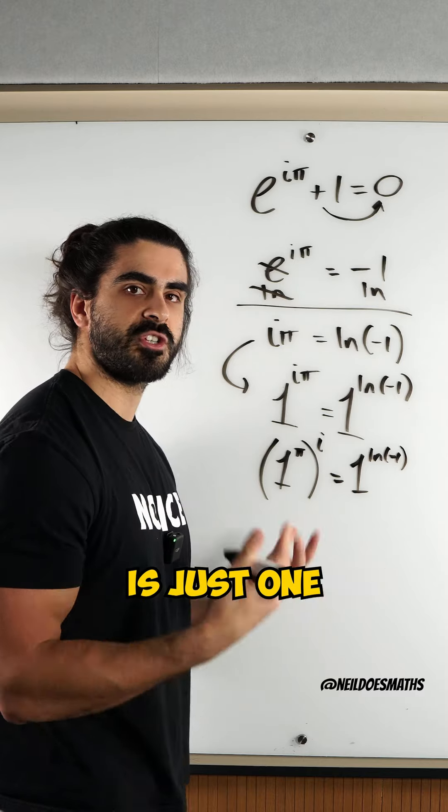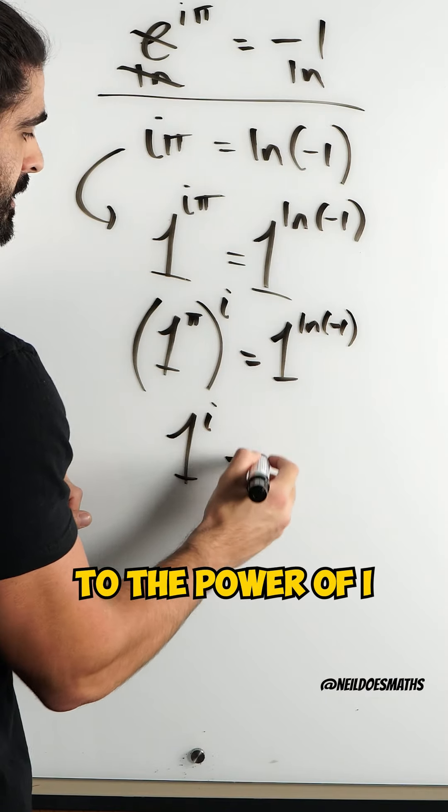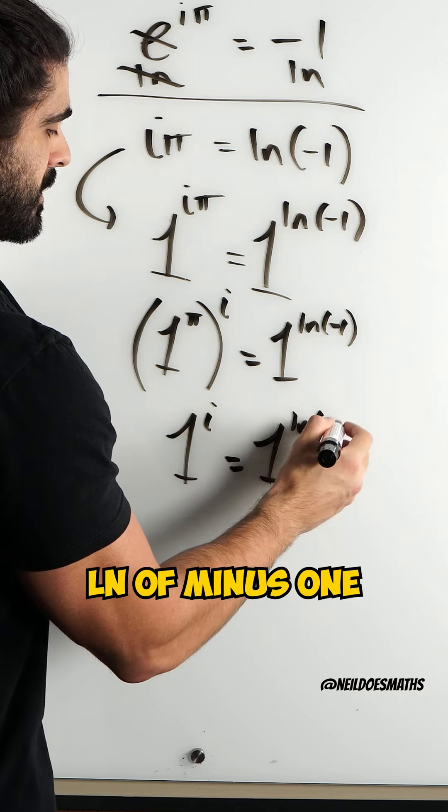But 1 to the power of anything is just 1. So I'm left with 1 to the power of i is 1 to the power of ln of minus 1.